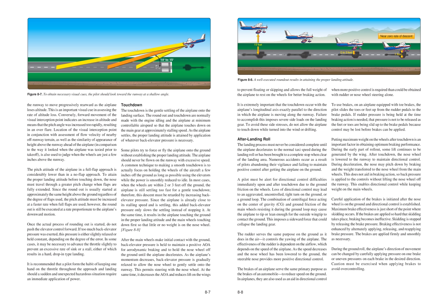To obtain necessary visual cues, the pilot should look toward the runway at a shallow angle, causing the runway to move progressively rearward as the airplane loses altitude. This is an important visual cue in assessing the rate of altitude loss. Conversely, forward movement of the visual interception point indicates an increase in altitude and means that the pitch angle was increased too rapidly, resulting in an overflare. The location of the visual interception point in conjunction with assessment of flow velocity of nearby off-runway terrain, as well as the similarity of appearance of height above the runway, is used to judge when the wheels are just a few inches above the runway.